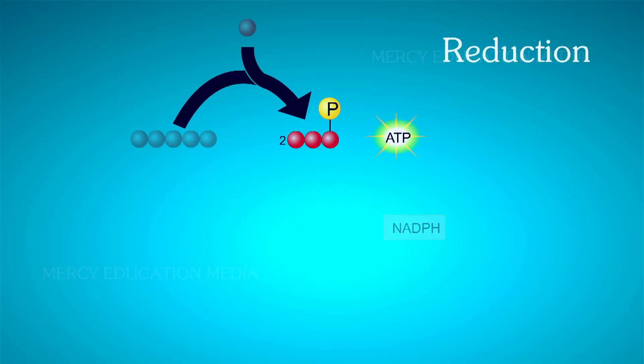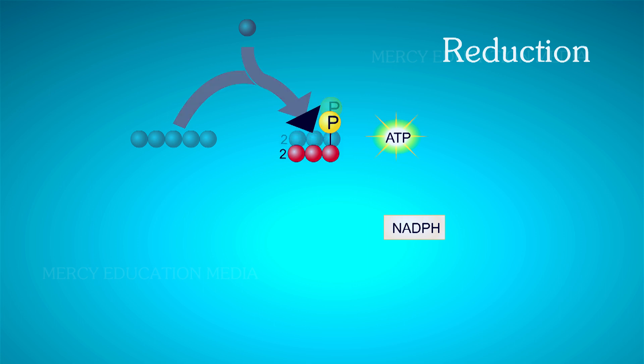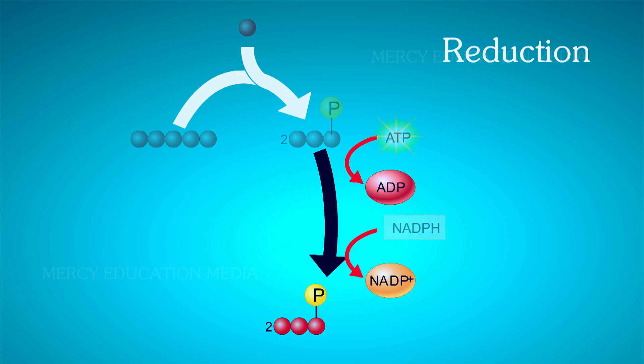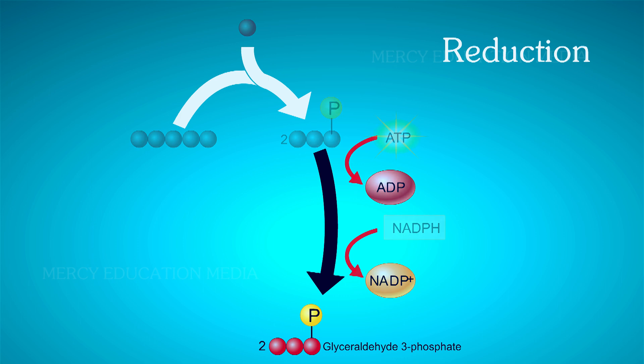Reduction: 2 moles of phosphoglyceric acid plus 2 NADPH2 in the presence of G3P dehydrogenase forms 2 moles of G3P.